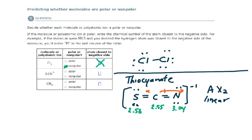Because these two atoms are not the same and this molecule is not symmetrical, what we have here is a polar molecule. The atom closest to the negative side would be the nitrogen.